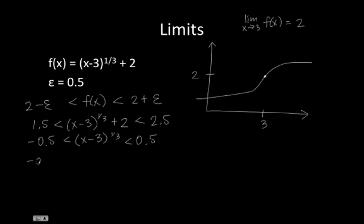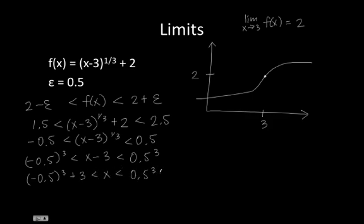And if we cube everything, we get negative 0.5 cubed is less than x minus 3, which is less than 0.5 cubed. And we can add 3 to each part and we get this.